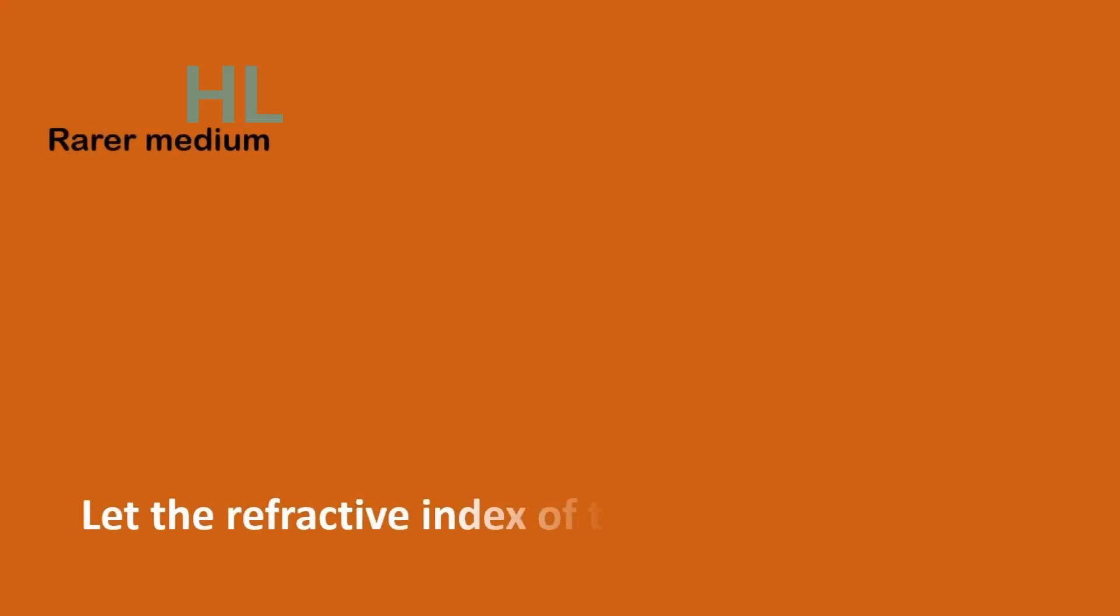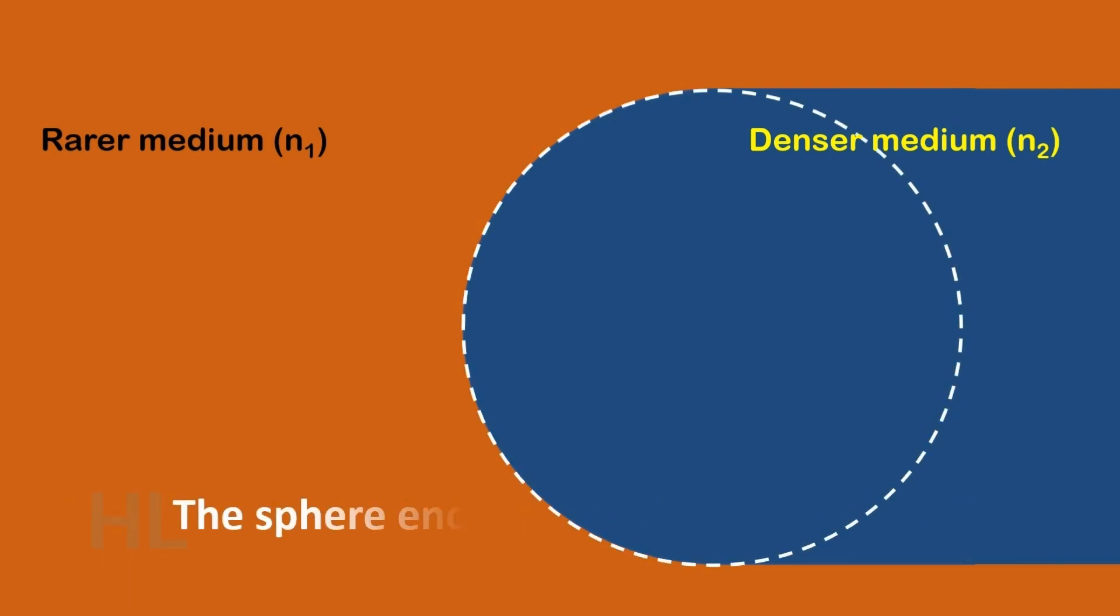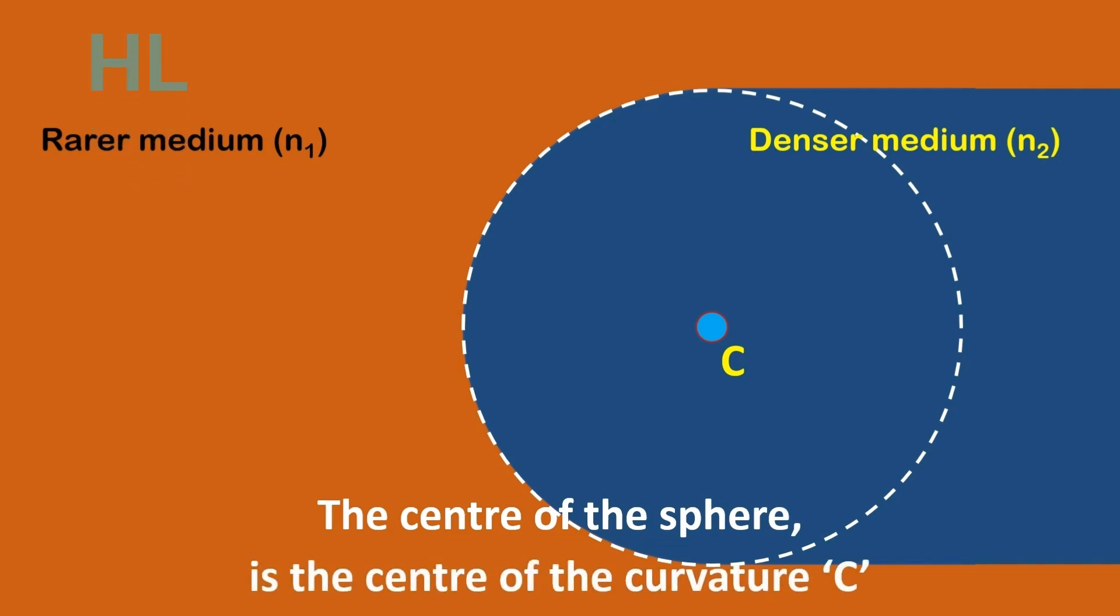Let it be rarer medium, let the refractive index of the rarer medium be N1. This one a denser medium, let the refractive index of the denser medium be N2. This is the sphere enclosing the curved surface, its centre C. The centre of the sphere will be the centre of curvature C.